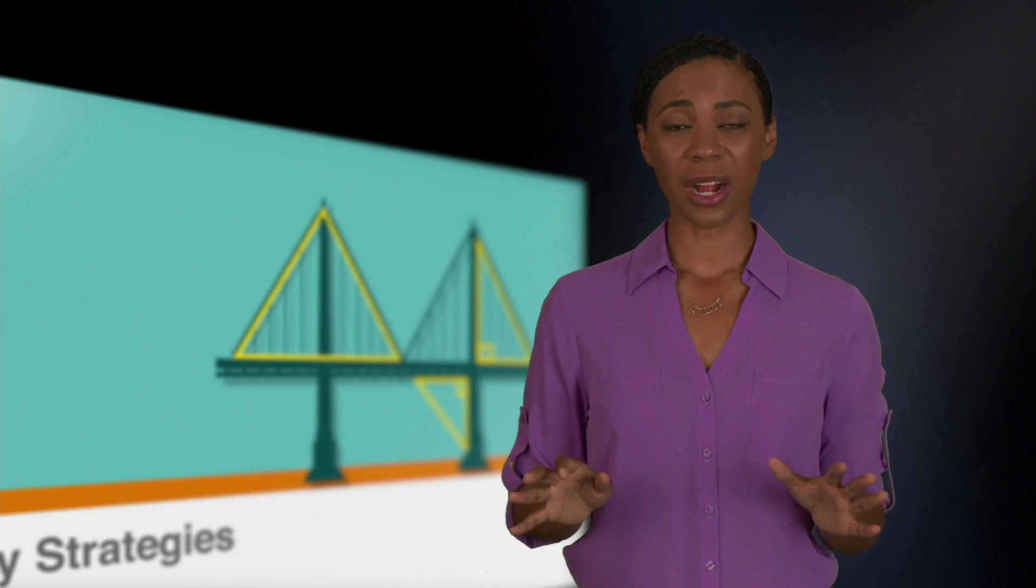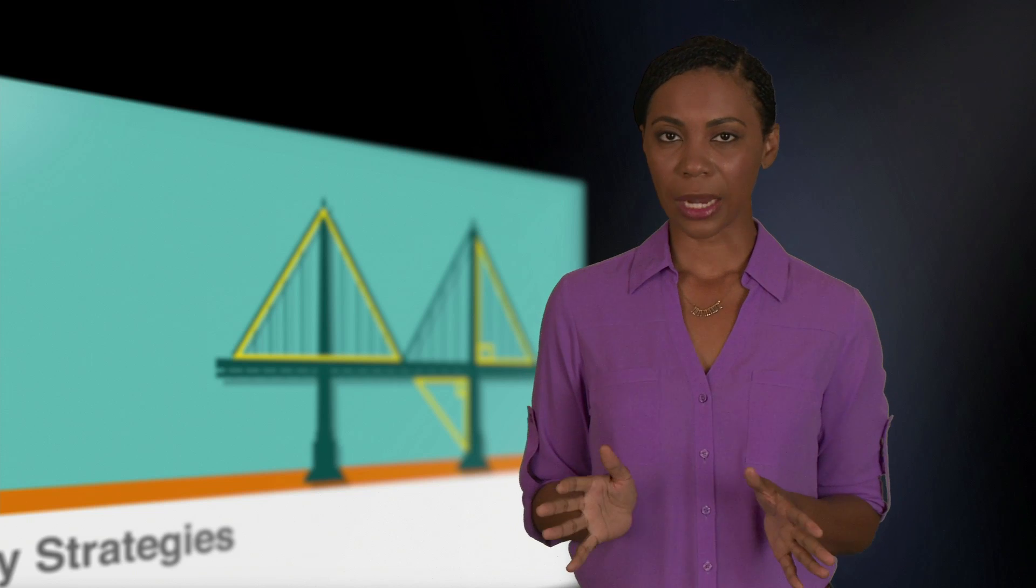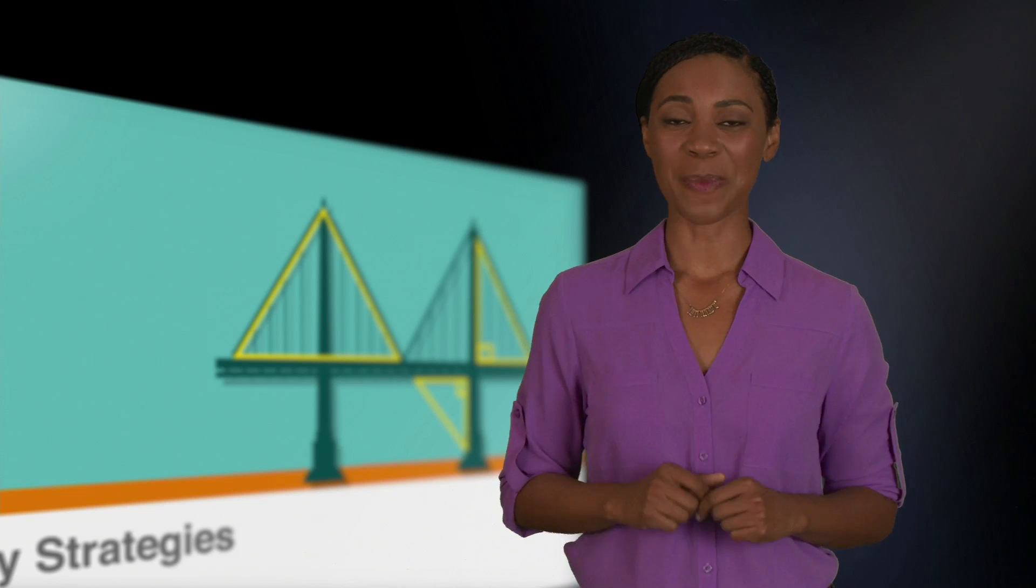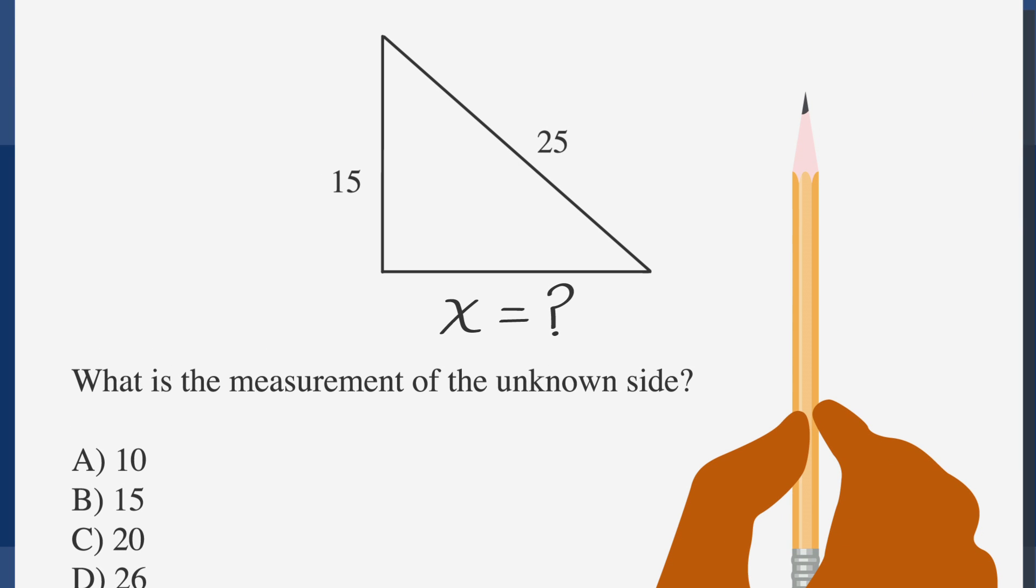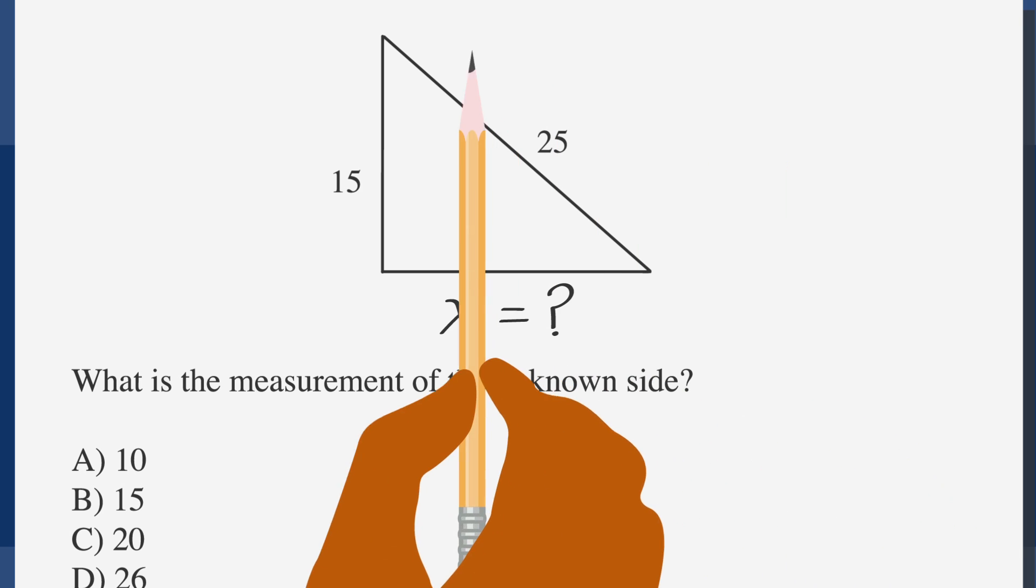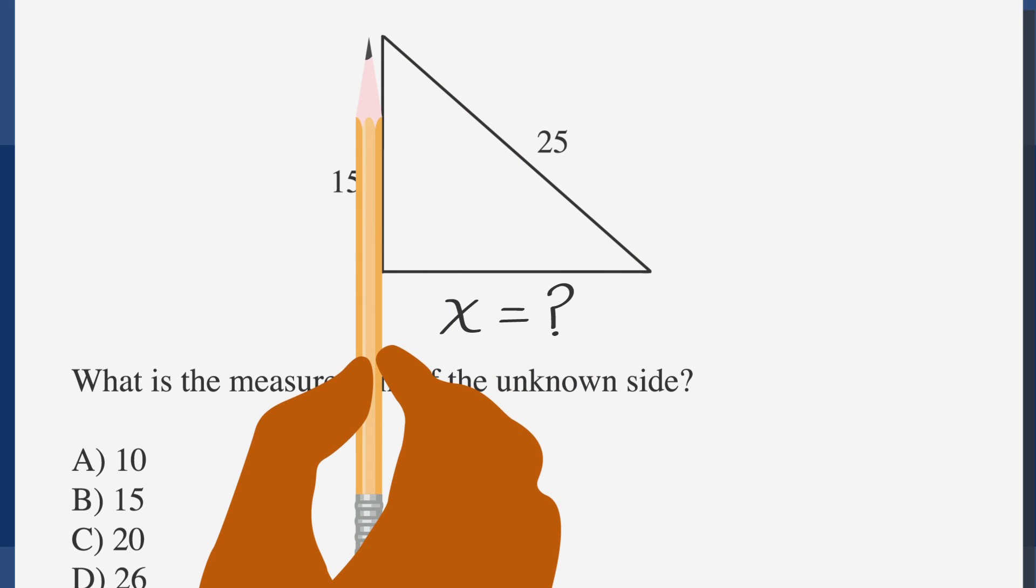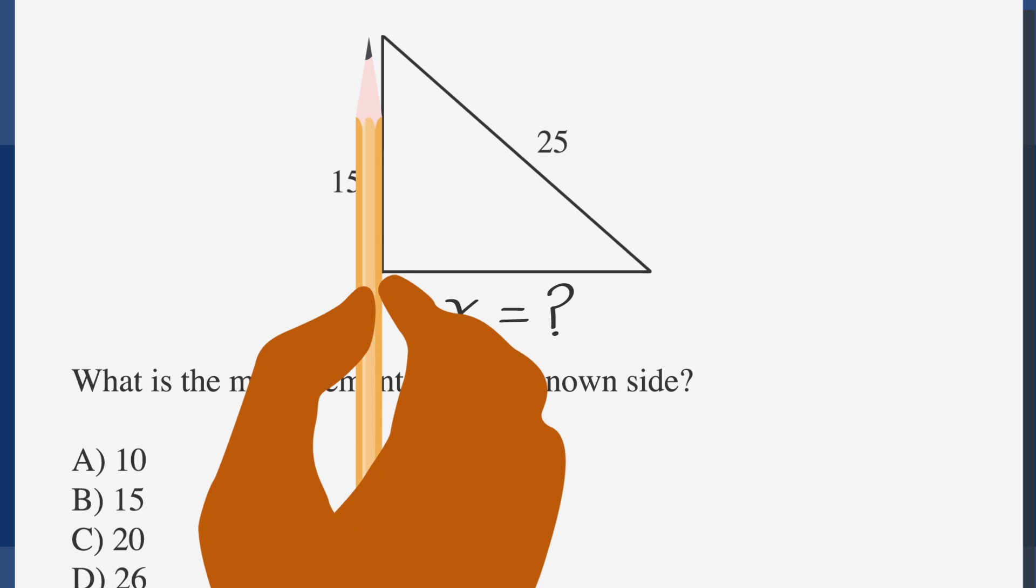Let's say we've completely forgotten the Pythagorean theorem. It happens. Here's where guesstimating comes in. First, we use our pencil to measure the two known sides. Measure the side that's labeled as 15 by lining up the tip of your pencil with one vertex and your fingers with the other vertex.